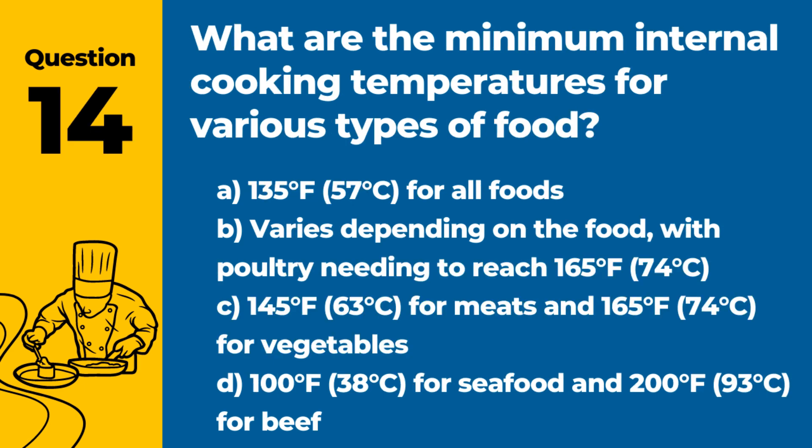Question 14. What are the minimum internal cooking temperatures for various types of food? Answer: B. Varies depending on the food, with poultry needing to reach 165°F (74°C). Different foods require specific minimum internal temperatures to ensure pathogens are destroyed.